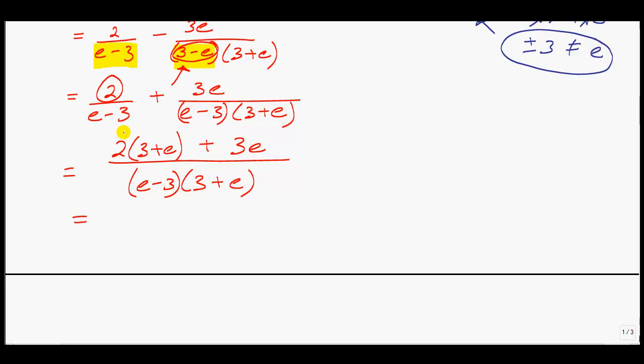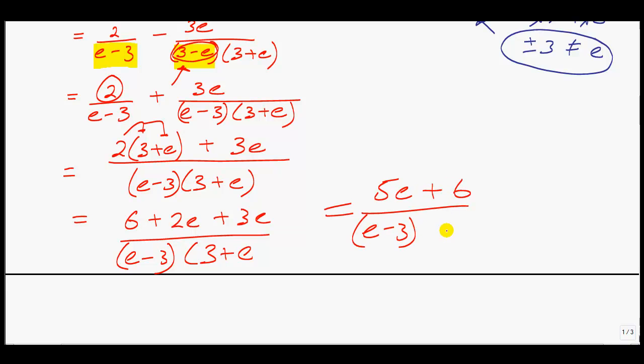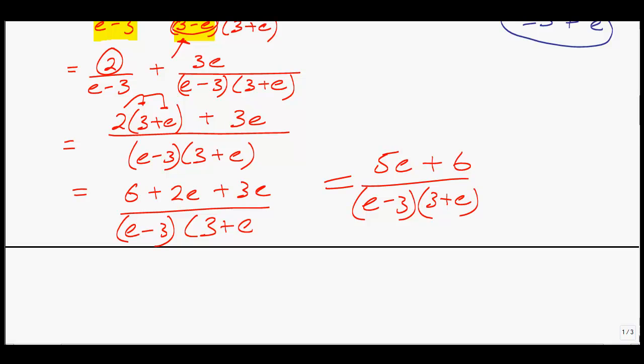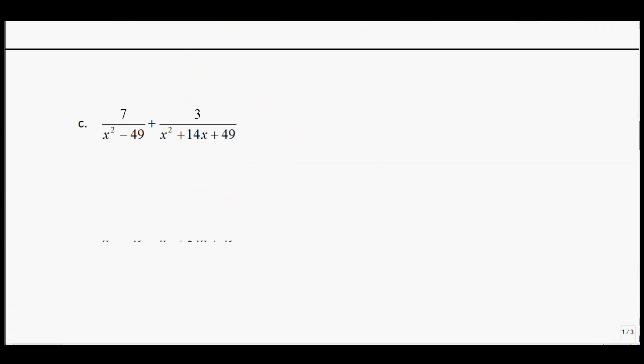Now I can use the distributive property. We have 2 times 3 is 6, plus 2e, plus 3e, all over my common denominator. Make sure you write this every single time. The last thing I would do is gather the like terms. How many e's do we have? We have 5e plus 6, all over e minus 3 and 3 plus e, or you could write it as e plus 3.